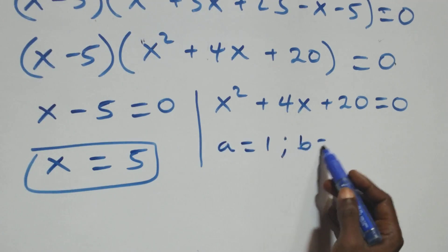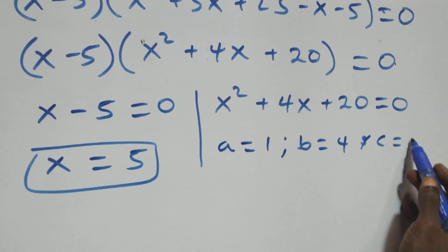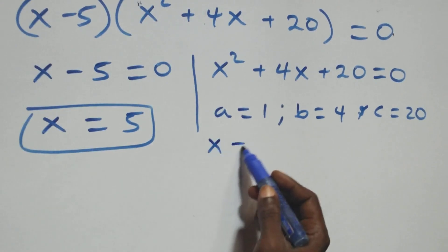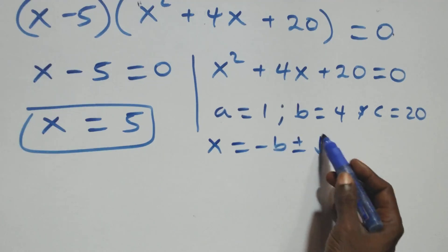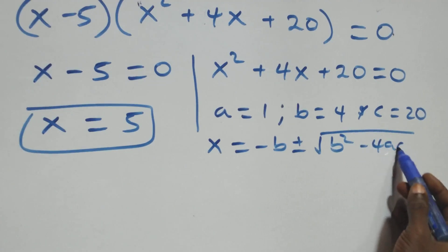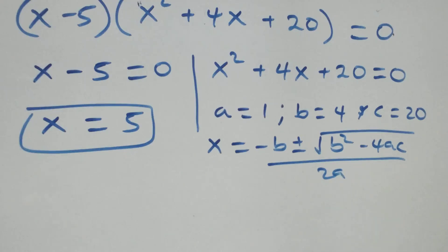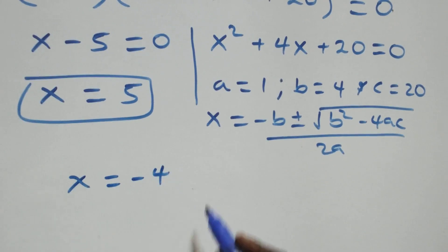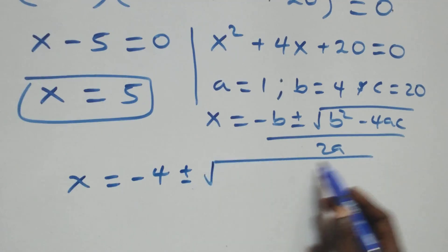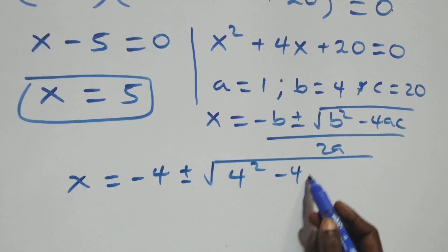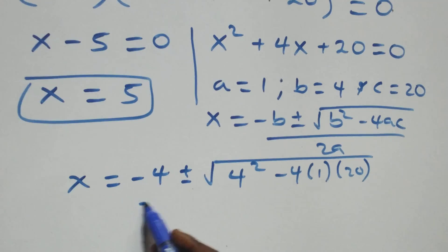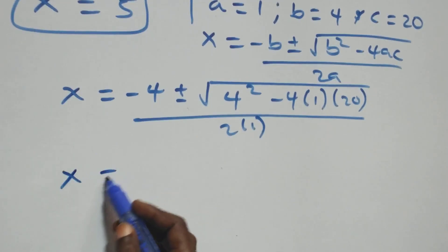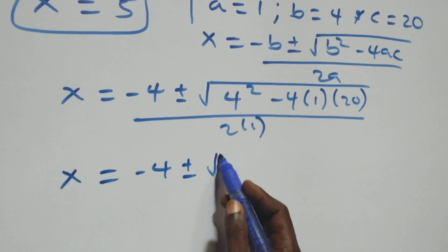For the quadratic equation, a equals 1, b equals 4, and c equals 20. Applying the quadratic formula: x equals minus b plus or minus square root of b squared minus 4ac, all over 2a. Substituting, x equals minus 4 plus or minus square root of 4 squared minus 4 times 1 times 20, over 2 times 1.